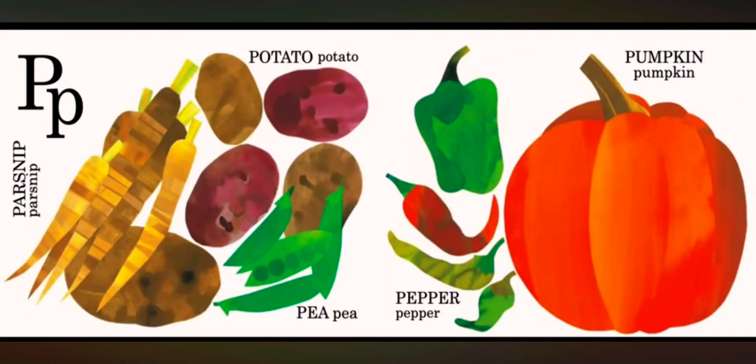P is for parsnip. P is for potato. P is for pea. P is for peppers. P is for pumpkin.